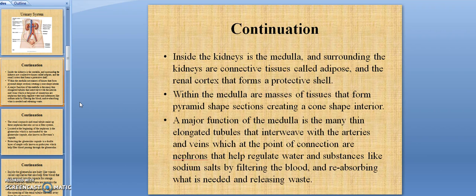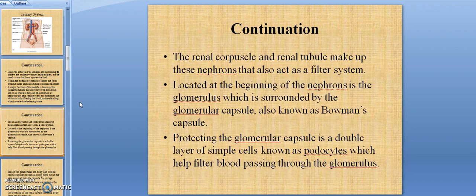Within the medulla are masses of tissue that form a pyramid-shaped section creating a cone-shaped interior. A major function of the medulla involves the many thin elongated tubules that interact with the arteries and veins, at the point of connection of these are nephrons. There are millions of these nephrons and they help regulate water and substances like sodium and salt by filtering the blood, re-absorbing what is needed, and releasing waste which is not needed. The renal cortical and renal tubules make up these nephrons. Located at the beginning of the nephron is the glomerulus, which is surrounded by the glomerular capsule, also known as Bowman's capsule.